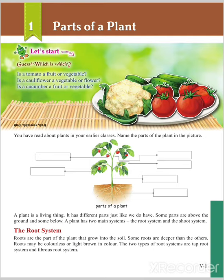Roots are the part of the plant that grow in the soil. Some roots are deeper than others. Roots may be colorless or light brown in color. The two types of root system are the tap root system and the fibrous root system.